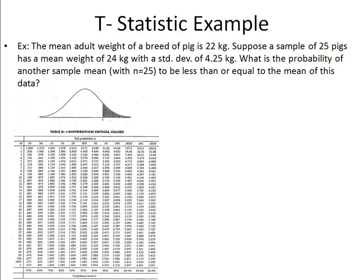So immediately we know that we're dealing with an n of less than 30. And we don't know our population variance, so we need to use a t-statistic for this. And so we need to use a t-distribution.